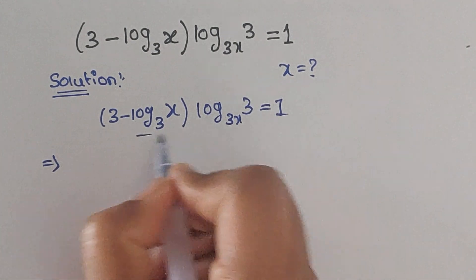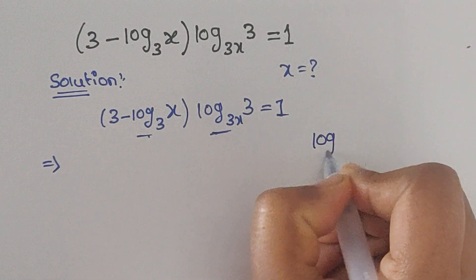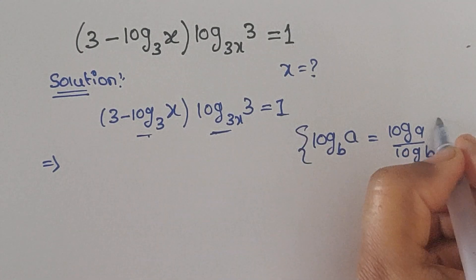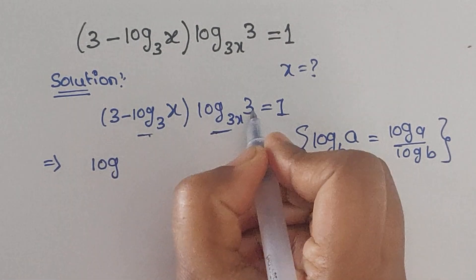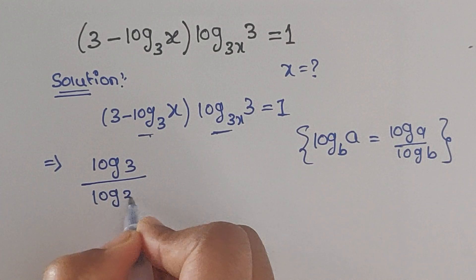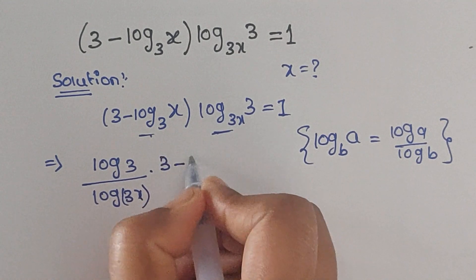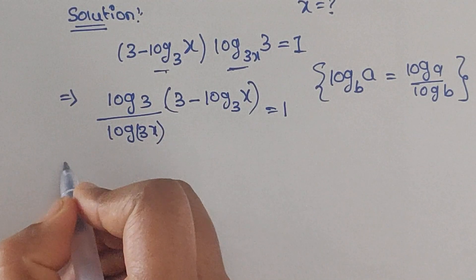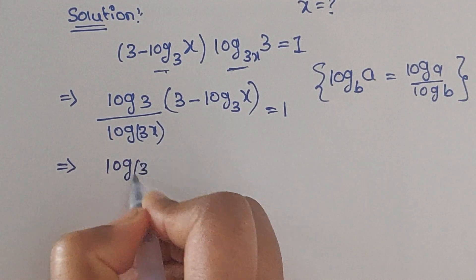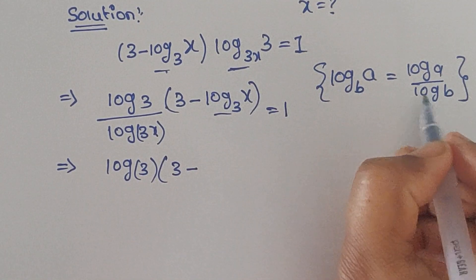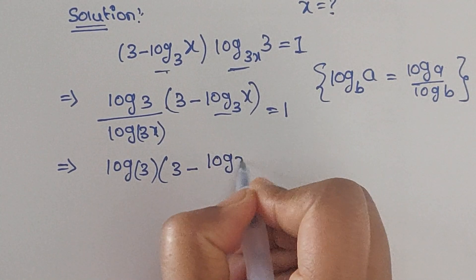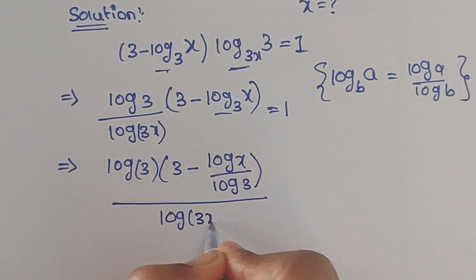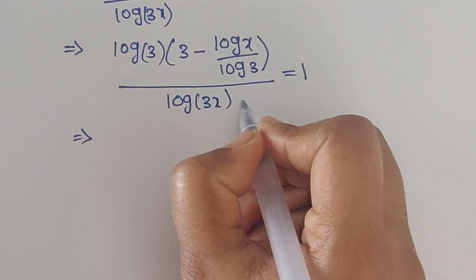First, we can apply the change-of-base formula: log base b of a equals log a divided by log b. Using this formula, we can write log 3 divided by log 3x, times 3 minus log base 3 of x, equals 1. Now applying the formula again, we can write log x and log 3 divided by log 3x, equals 1.